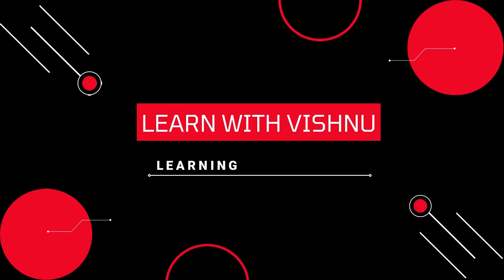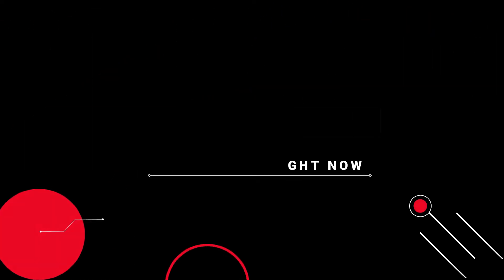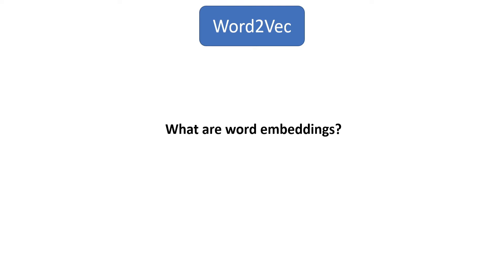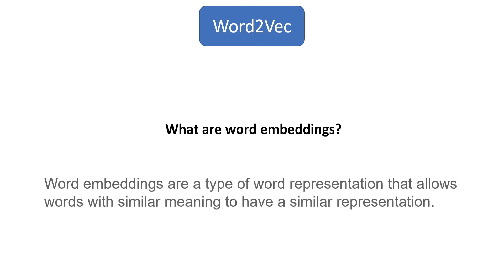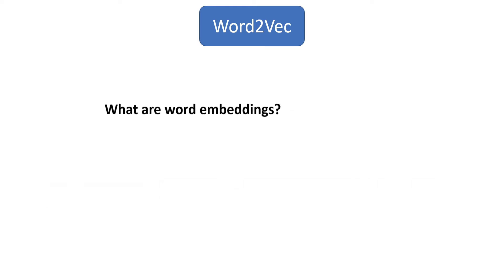In this tutorial, we are going to learn about word embeddings. Let's begin. What are word embeddings? Word embeddings are a type of word representation that allows words with similar meaning to have a similar representation. What do we mean by that? Let's see.